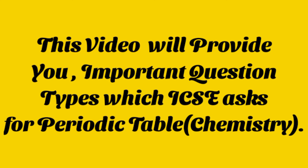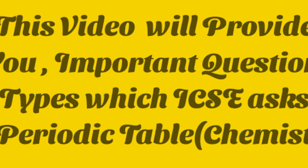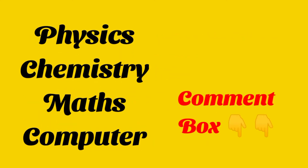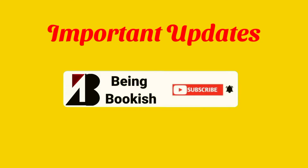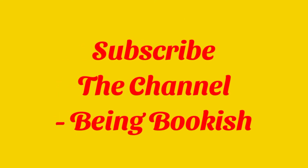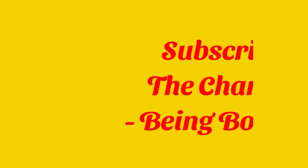Particularly in this video, you are going to get the important question types which ICSE asks for the Periodic Table chapter, which is Chemistry Chapter 1. If you want important questions for different subjects like Physics, Chemistry, Math, and Computer, do let me know in the comment box. Hit the subscribe button to get notified each time I upload a new video.